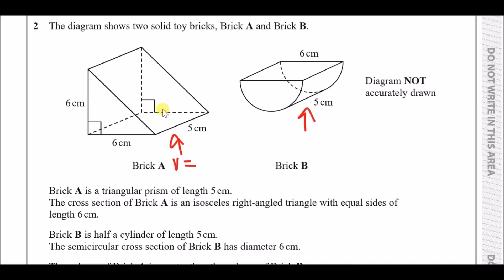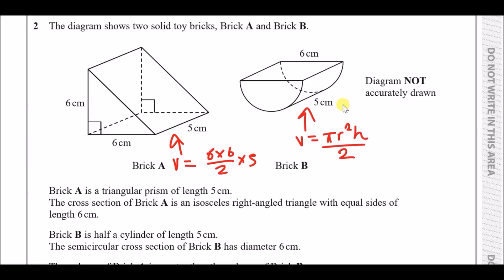To find the volume of the triangular prism, work out the cross-section area: 6 × 6 ÷ 2, then multiply by the length of 5. For the half cylinder, start with the volume of a full cylinder — π r² × height — then divide by 2 because it's a half cylinder.